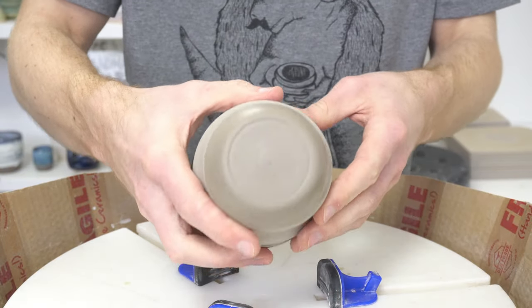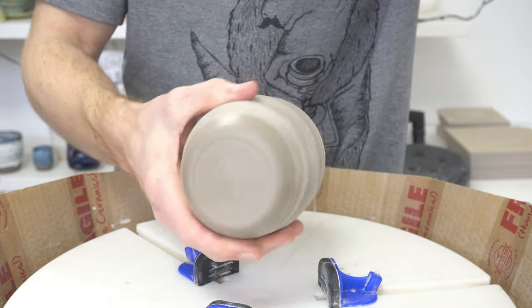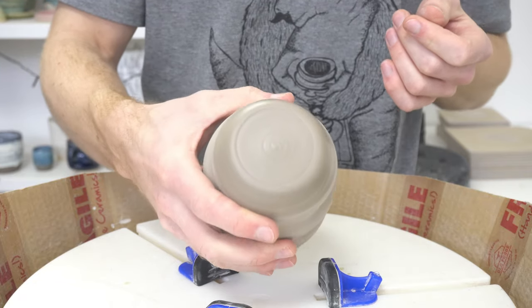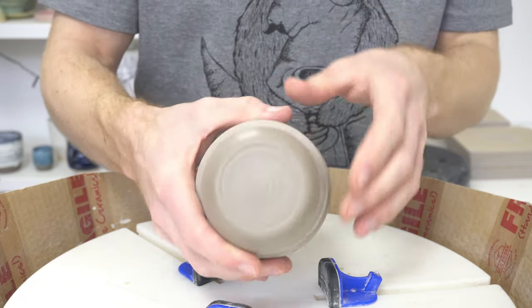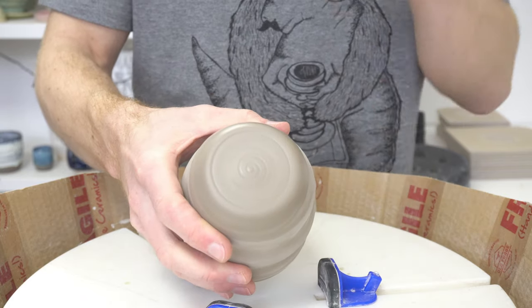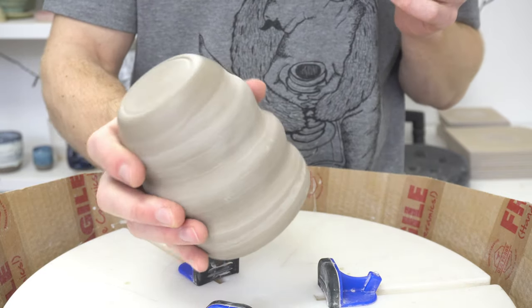Again, because it's a larger ball shape and I'm doing this on leather hard clay, it gives a really nice edge so there's no sharp edges. You don't need to go and go back and finish that. That is a finished pot.